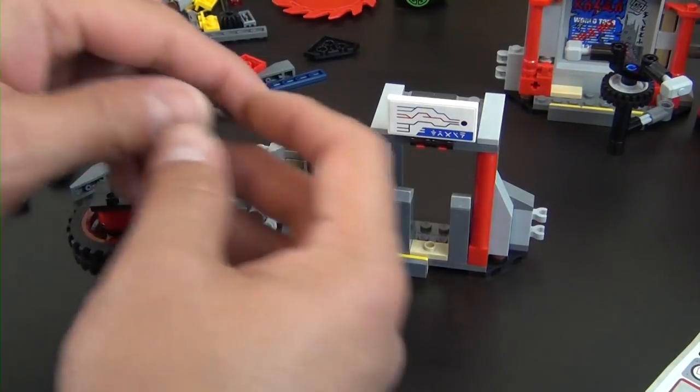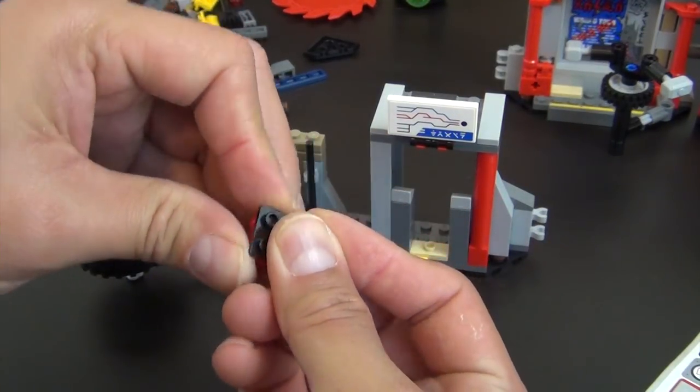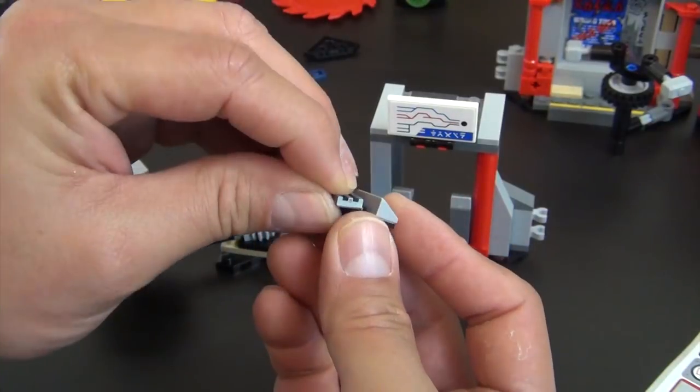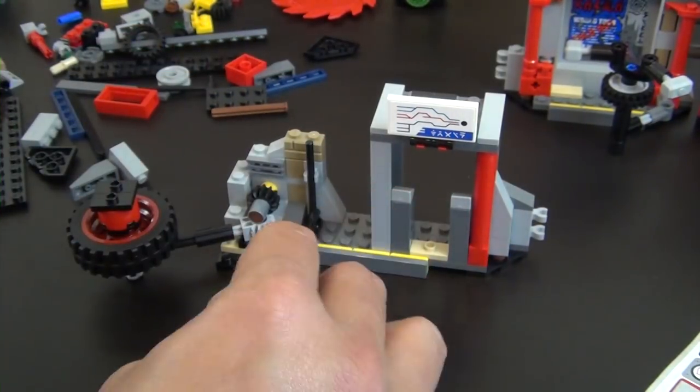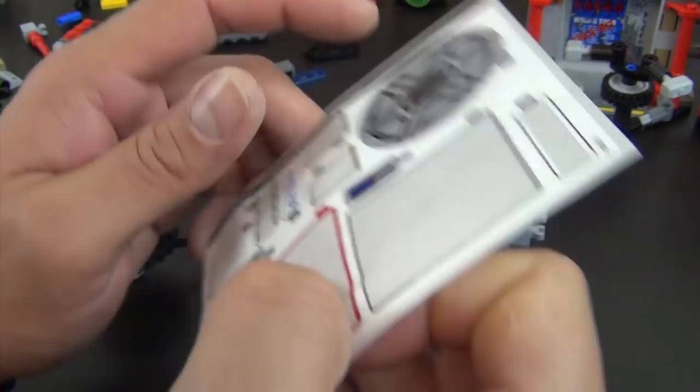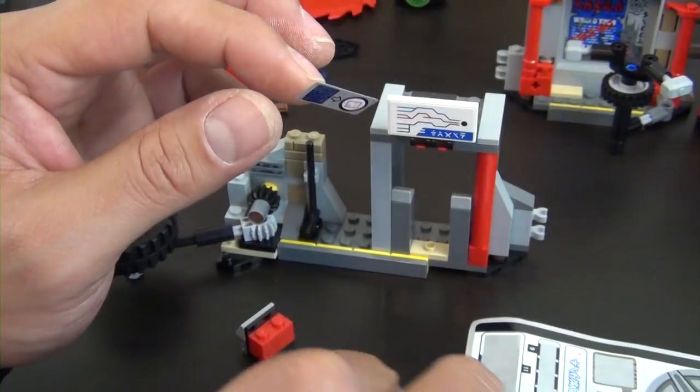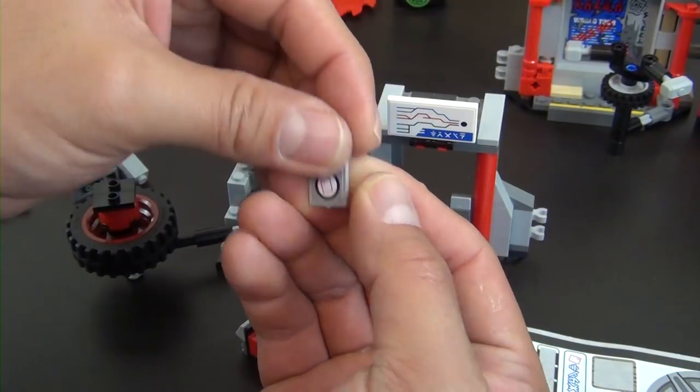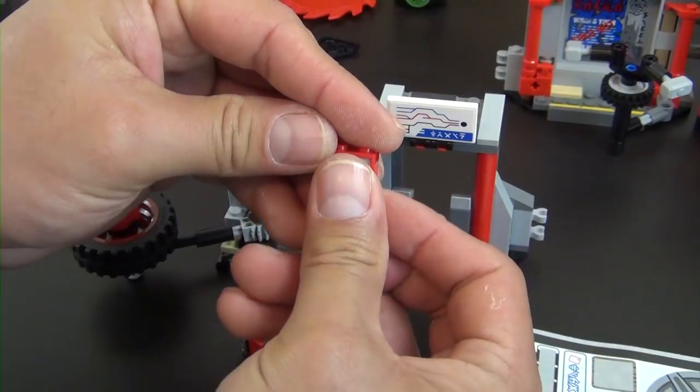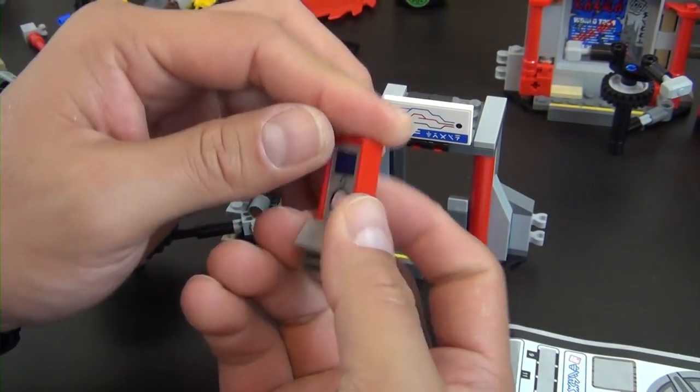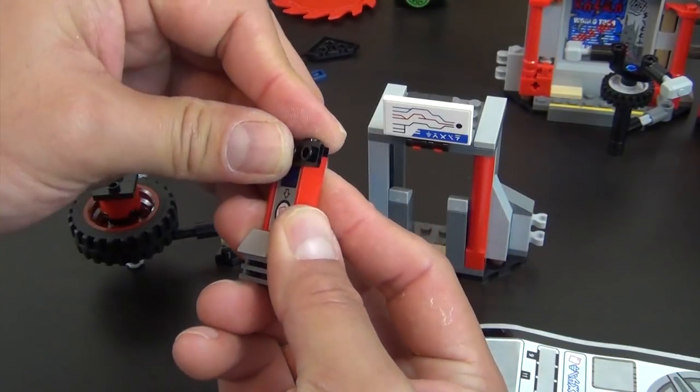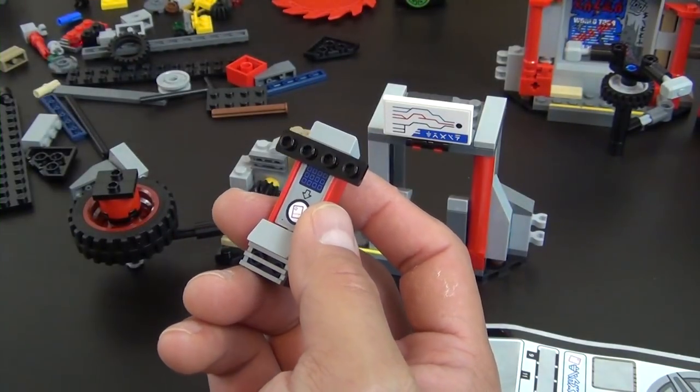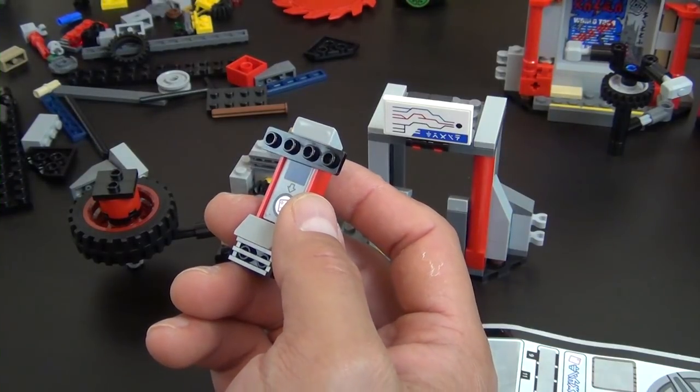Next up is a bracket with a red brick on it, double wide cheese slope, grill tile. We have a gray window panel. This is going to get a sticker. And then it's going to pop into this red window frame. Go right there. Bracket, slope, and a tile.